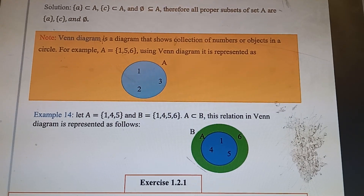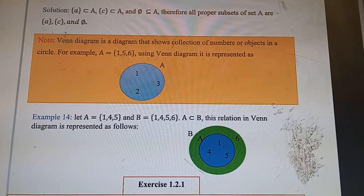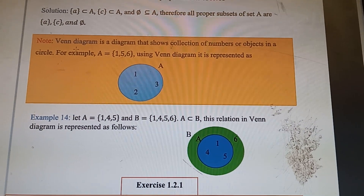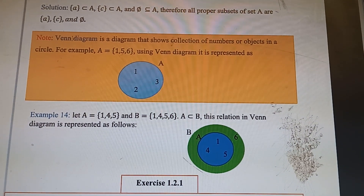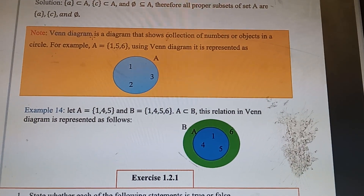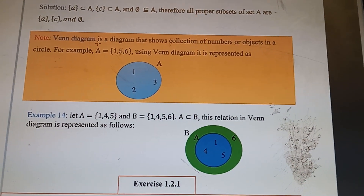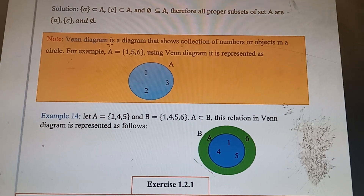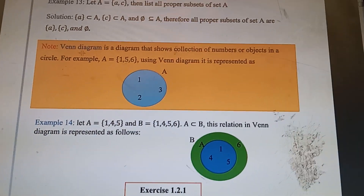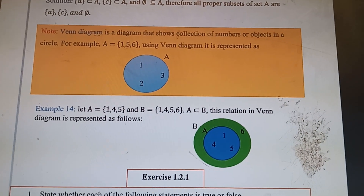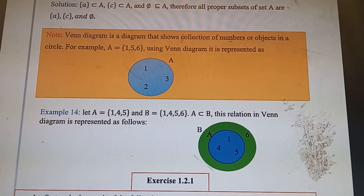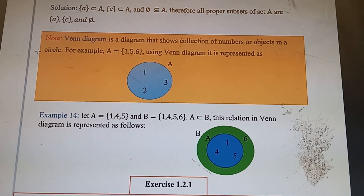Today's lesson is about Venn diagrams. The Venn diagram was introduced at Cambridge University by mathematics professor John Venn. A Venn diagram is a diagram that shows the collection of numbers or objects in a circle.